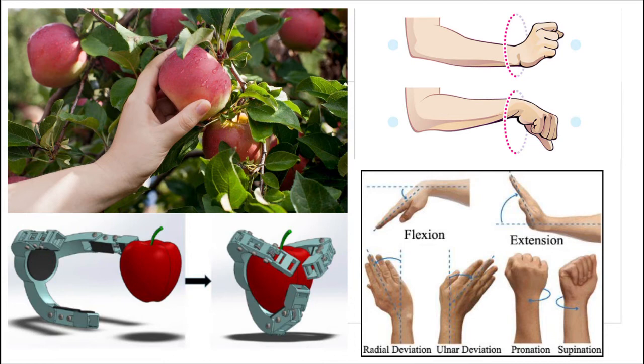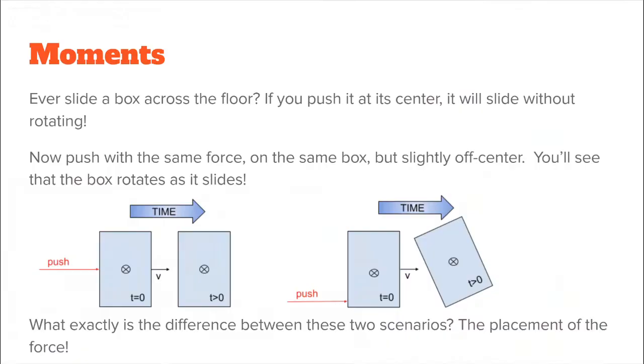Have you ever slid a box across the floor? If you push it at its center of mass, it will slide without rotating. Now push with the same force on the same box, but slightly off center. You'll see that the box rotates as it slides. What is the difference between these two scenarios? We know it's not how hard you're pushing, or even the box itself. The only thing we varied is the placement of the force.